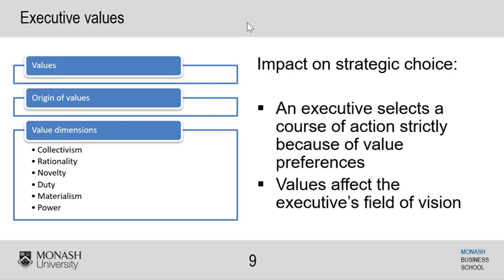Looking at each value dimension: collectivism is about working together, humankind, social systems, and respect for all people - corporate social responsibility strategies often stem from collectivist traits a CEO might have. Rationality refers to the degree to which they make decisions without letting emotions come into play and whether decisions are logical. Novelty is where they value change and new ideas, push things, innovate, and like to see what they can do - there's a degree of risk involved with novelty, but they like extending and doing things differently if possible.